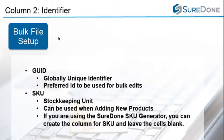The second column that we always need is our product identifier. We strongly recommend always using the GUID, or Globally Unique Identifier, for all your bulk uploads, as variation listings can share a SKU between parent and child listings, and you always want to make sure that you're editing the correct one. You can also use the SKU, or stock keeping unit — this is fine if you're adding new products that do not have variations. If you're using the SKU generator, you can add the SKU column header and leave all the fields blank, and SureDone will automatically generate an SKU for each of your new products.